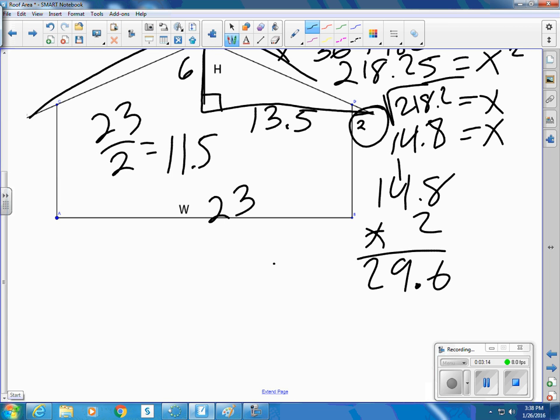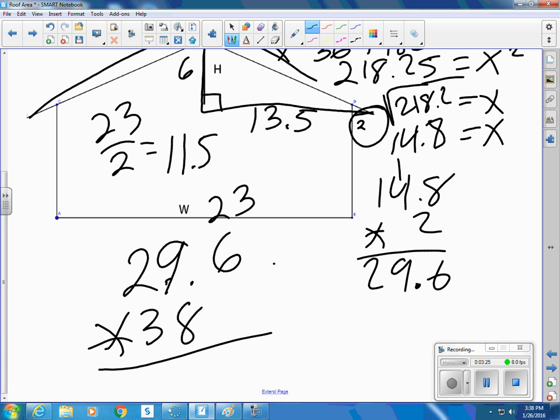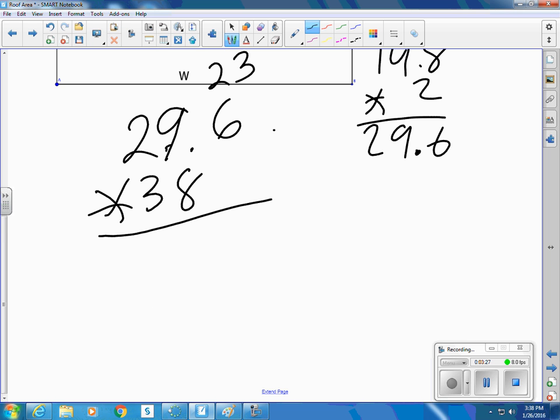So we have a dimension that's 29.6 times 38 to find out how many square feet we need to cover. 1,124.8. So 1,125 feet would be great for trying to figure out how much. You probably round up a little bit for buying shingles.